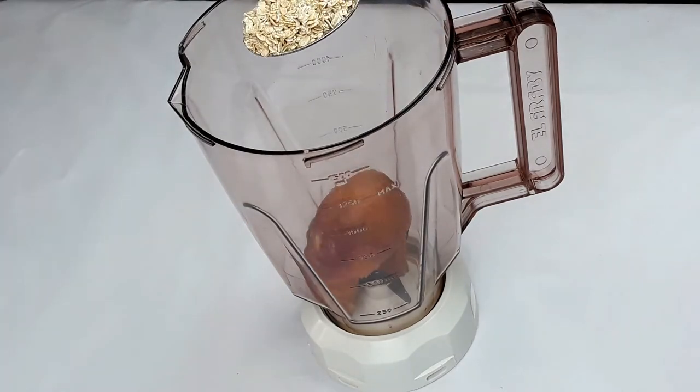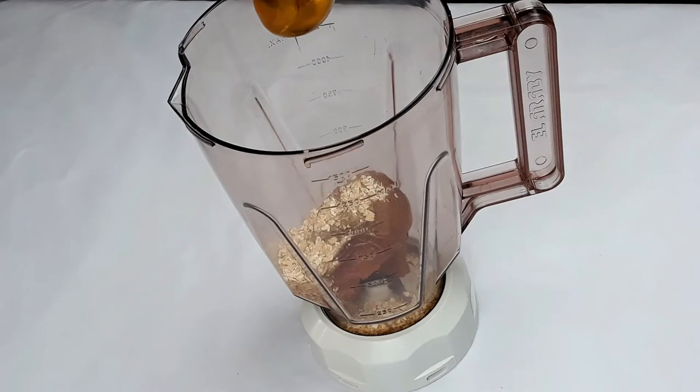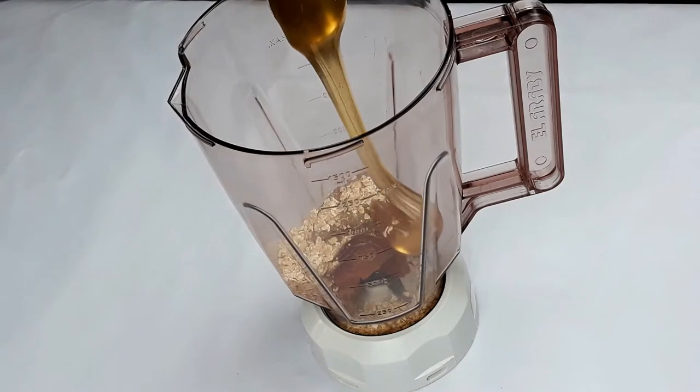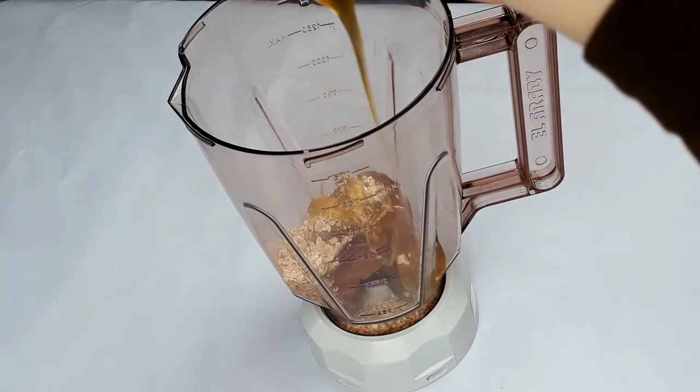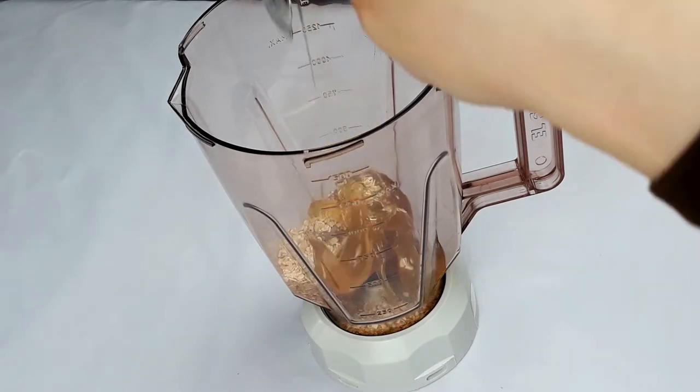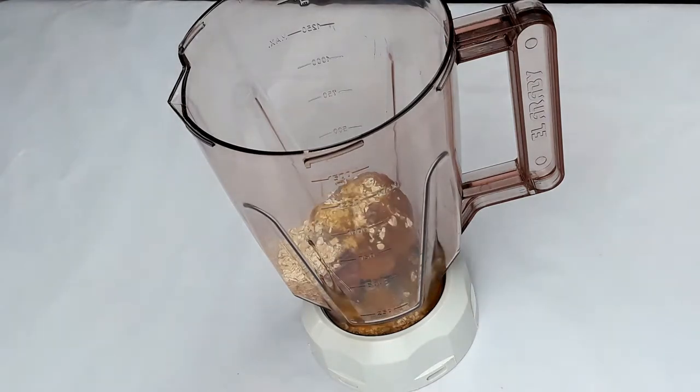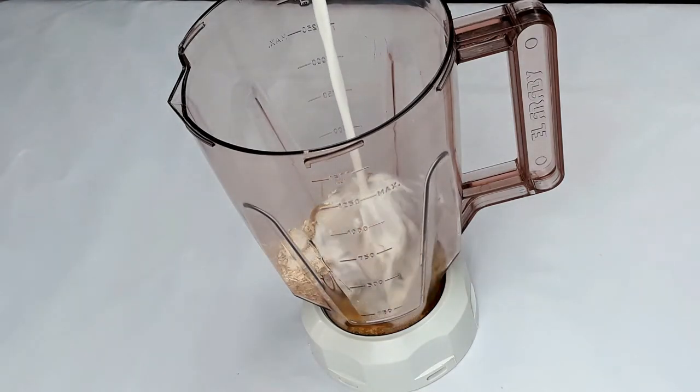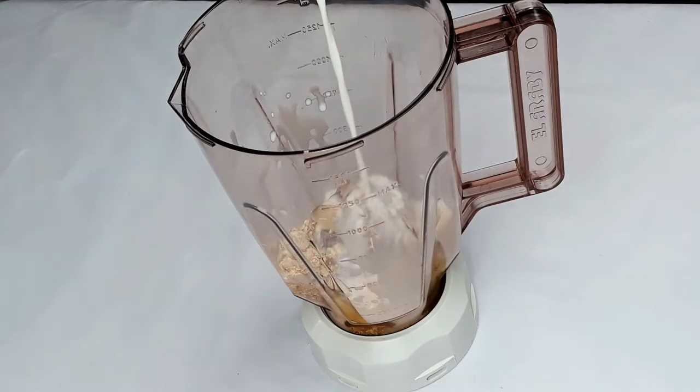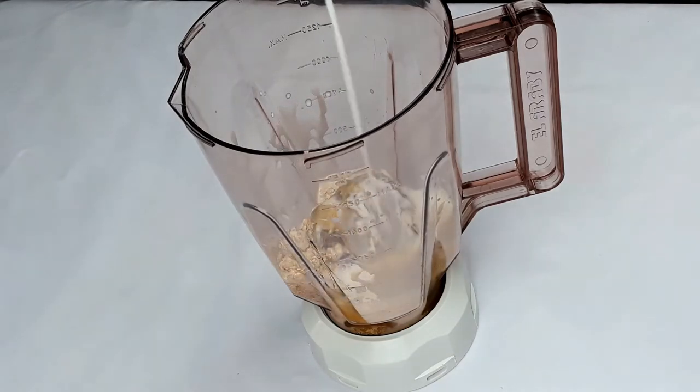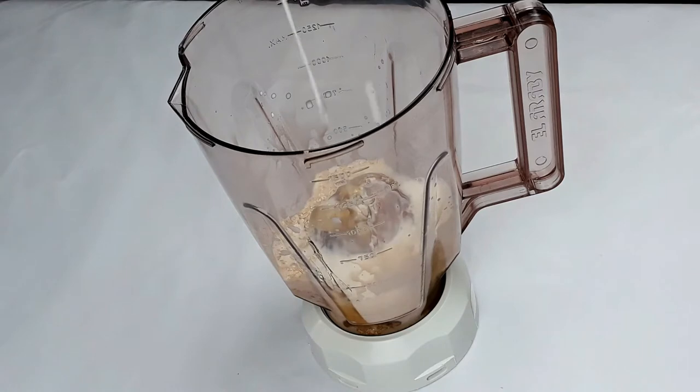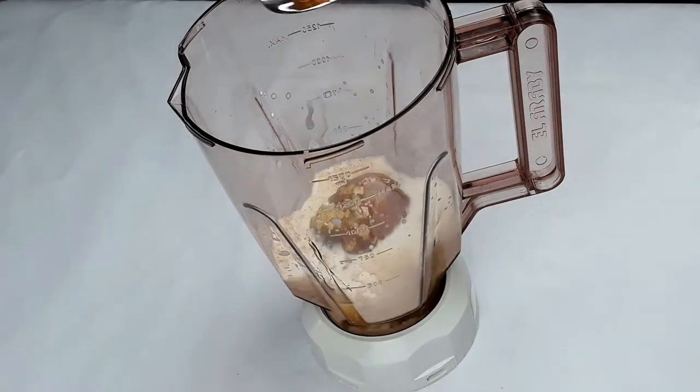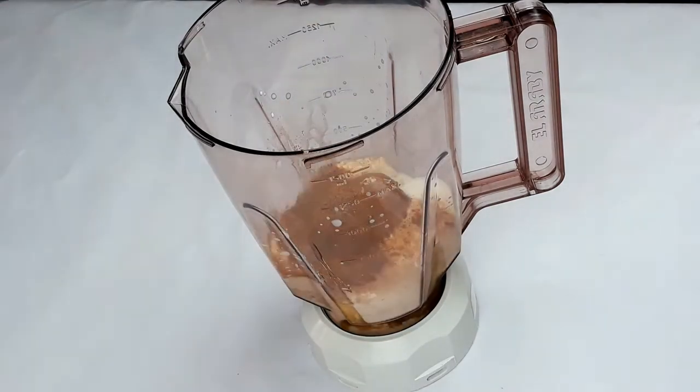For the first type, we need a cup of frozen peaches, add 2 tablespoons of oats and 2 tablespoons of honey. Then add a cup of milk, a teaspoon of cinnamon, and a teaspoon of flaxseed.